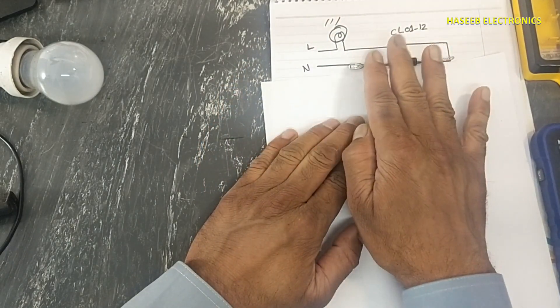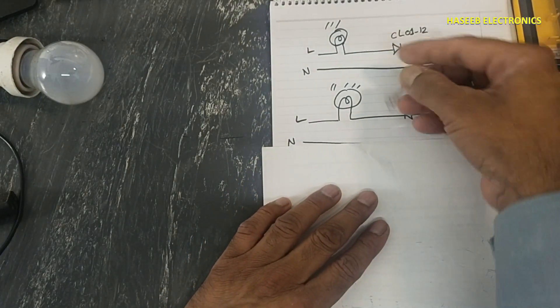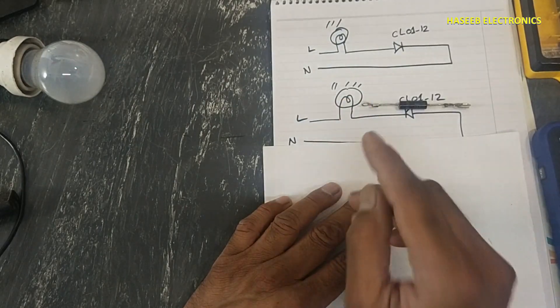It will clip one peak and lamp will turn on. And if you connect in this way, at that time it will cut the second side peak and lamp will turn on.